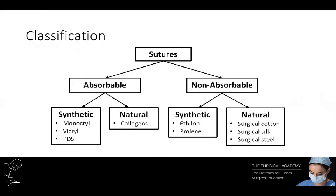Broadly, sutures can be classified into absorbable or non-absorbable materials. They can be further subclassified into synthetic or natural sutures and monofilament or multifilament sutures. The ideal suture is the smallest possible to produce uniform tensile strength, securely hold the wound for the required time for healing, then be absorbed. It should be predictable, easy to handle, produce minimal reaction, and tie the knot securely.